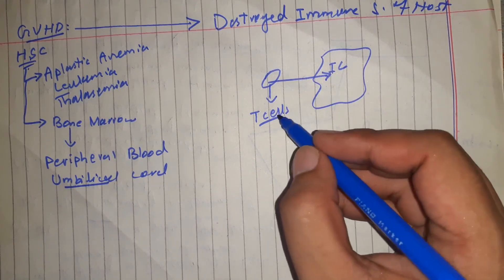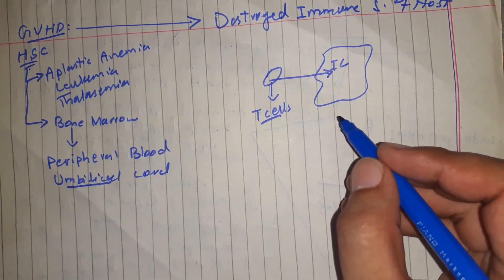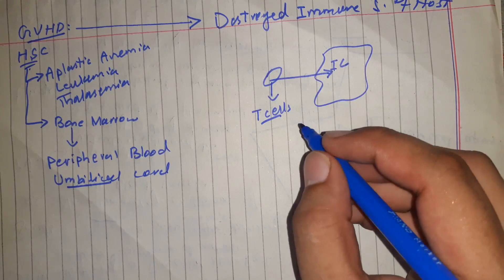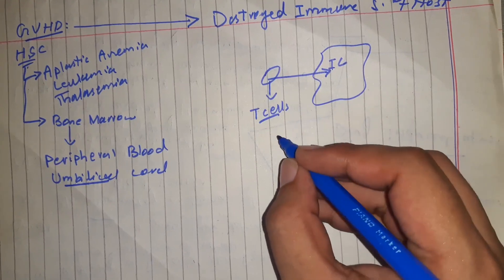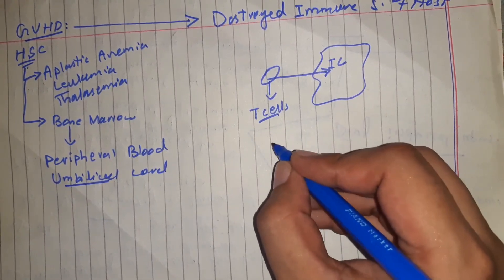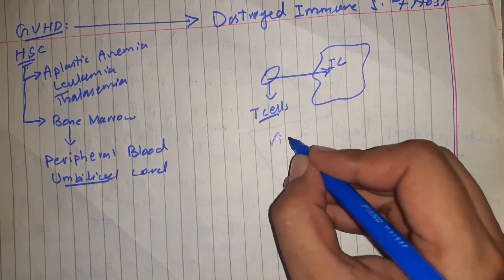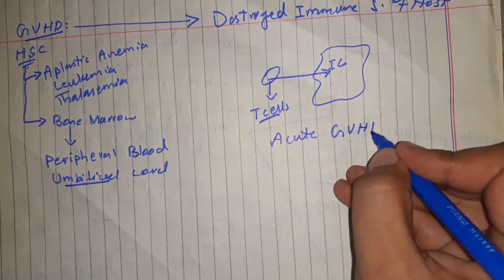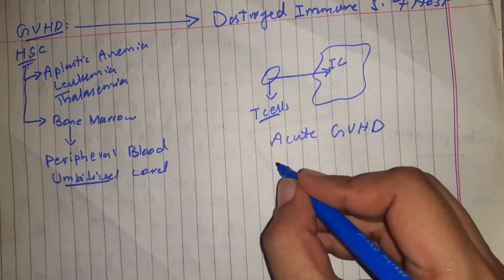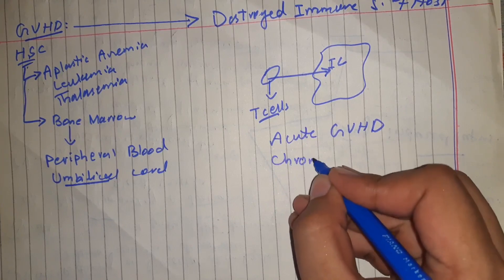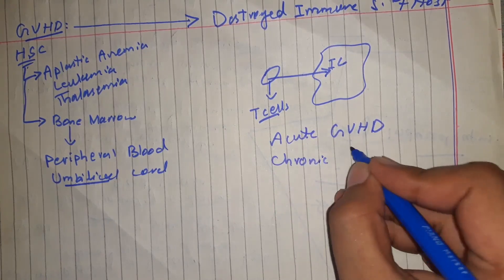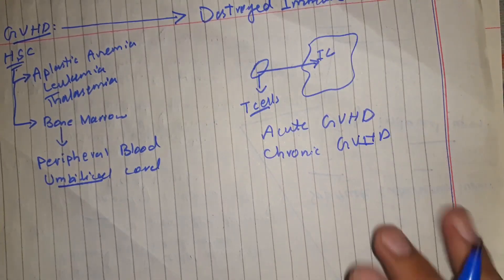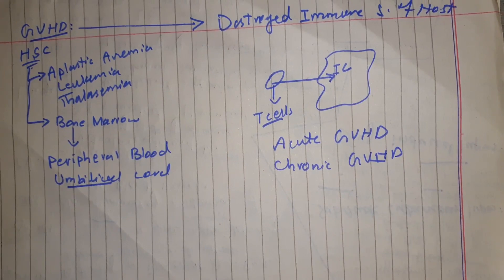Both CD4 and CD8 T cells are involved in this process. Graft versus host disease can manifest in two forms: acute graft versus host disease or chronic graft versus host disease. Acute graft versus host disease arises within days or weeks after transplantation.